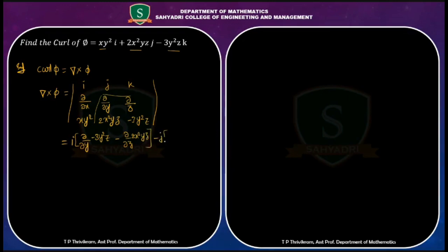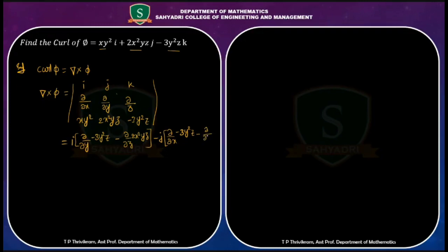Next, minus j into the corresponding 2×2 determinant. We need ∂/∂x of (−3y²z) minus ∂/∂z of (xy²).